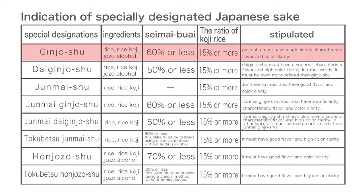Ginjoshu: the ingredients must be rice, rice koji, and jozo alcohol. It must have a polishing ratio of 60% or less. The ratio of koji rice — that is, the ratio by weight of koji rice to polished rice — must be 15% or more. It is also stipulated that ginjoshu must have a sufficiently characteristic flavor and color clarity. There should be no more than 10% jozo alcohol relative to the rice by weight.